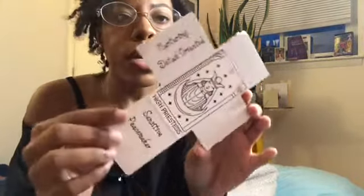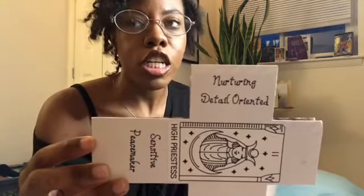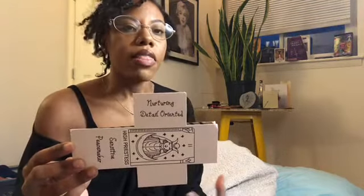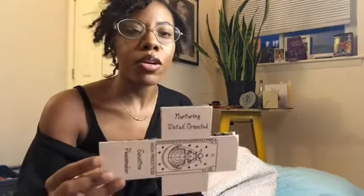Life Path 2s are very nurturing. The moon is the sign of Cancer, and these people are known for being a motherly, nurturing, and caring vibration. Because they have this nurturing, loving side to them, they tend to give a lot — so much that they may become resentful. They give so much of themselves that they can lose themselves in other people, similar to the Life Path 1 lesson of learning not to be codependent.